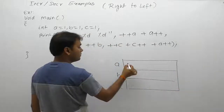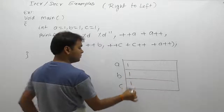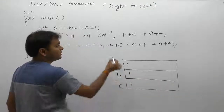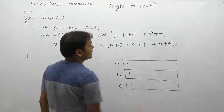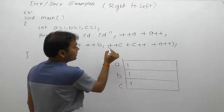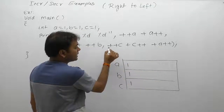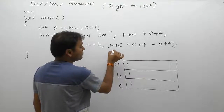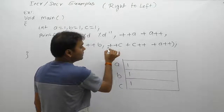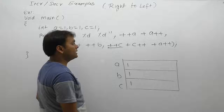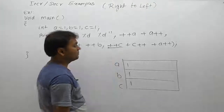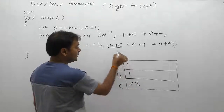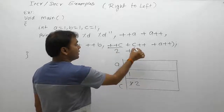The initial value of a, b, and c is one. We are solving the last expression, which is the third expression. According to the initialization rule, we solve from left to right. The first operator here is pre-increment, so according to the pre-increment rule: first increment, then replace.